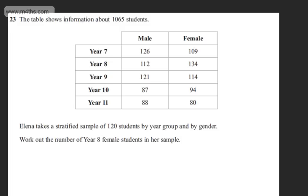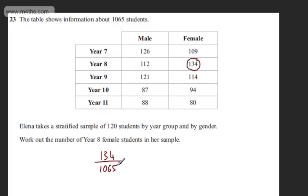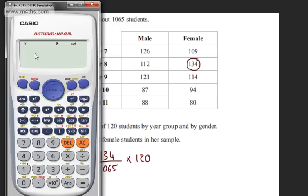The question carries two marks. So let's locate the year 8 females. We've got them here. All we need to do is simply write 134 of the 1,065 and multiply that by 120. It's a calculator question, so let's go ahead and do that.